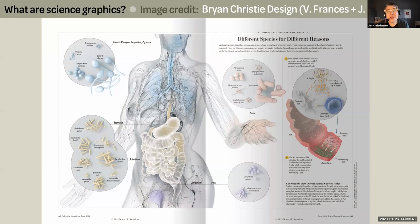For example, here's an information graphic from the pages of Scientific American. The team at Brian Christie Design used visual symbols and thoughtful composition to convey very specific information that is rooted in research.